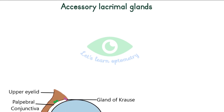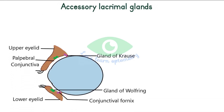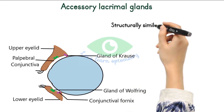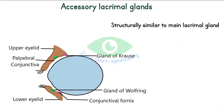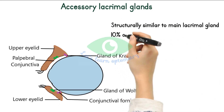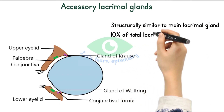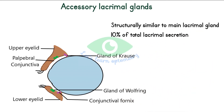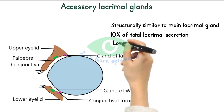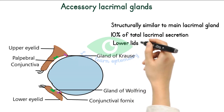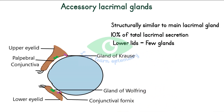The accessory glands of Krause and Wolfring are located in the subconjunctival tissue from the fornix area to near the tarsal plate. Although these glands are considerably smaller, they are structurally similar to the main lacrimal gland. They account for about 10% of the total lacrimal secretion. Compared to the upper lid, the lower lid has very few accessory lacrimal glands.